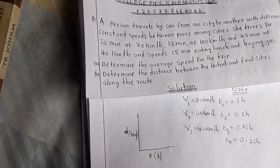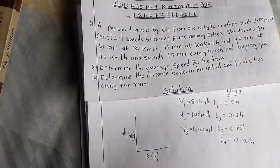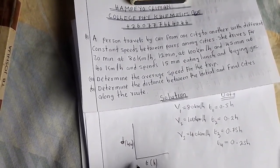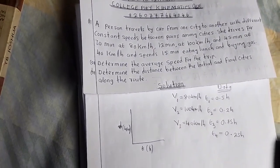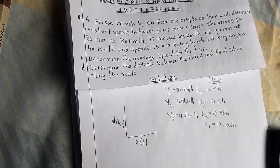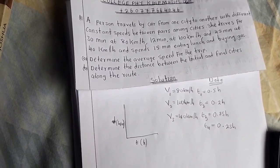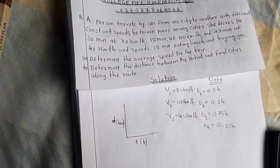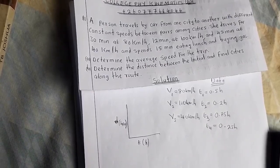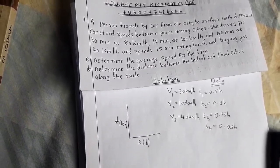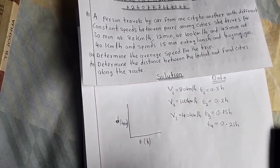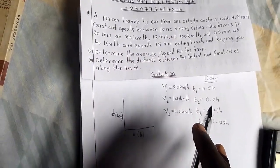This is a distance-time graph, with distance in kilometers on one axis and time in hours on the other. To find the total distance traveled, we are going to multiply each speed by its corresponding time. This will also directly give us the answer to part B.